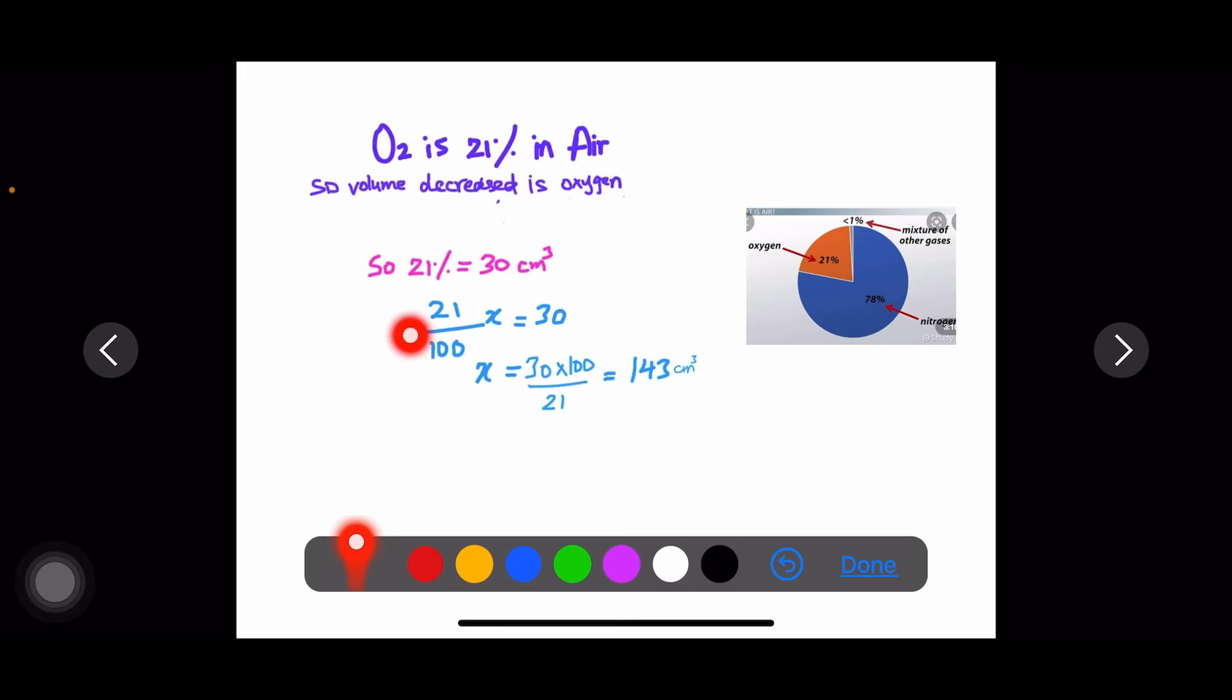21% of the whole air is equal to 30 cubic centimeters that has reacted. So we can find out 21 by 100 of x, where x is the starting volume, equals 30. Starting volume x we can find out by cross multiplication, so x equals 143 cubic centimeters.